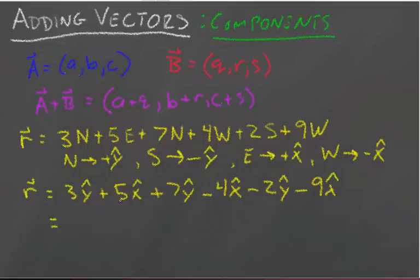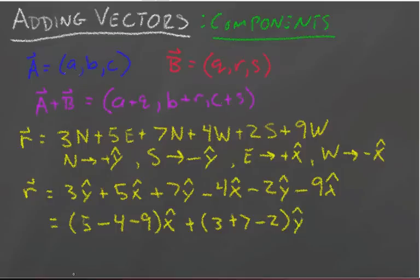Okay, so now we just collect terms. So we have five, minus four, minus nine in the x-hat direction. And then we have three, seven, minus two in the y-hat direction.